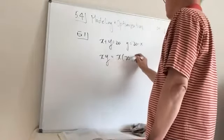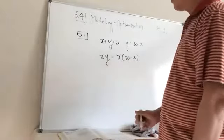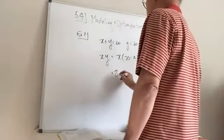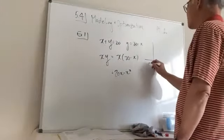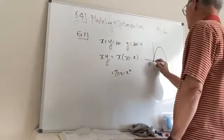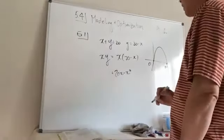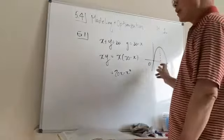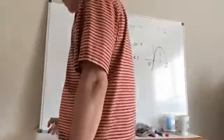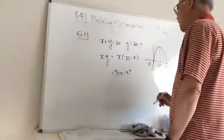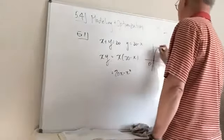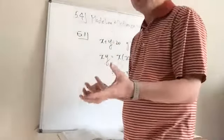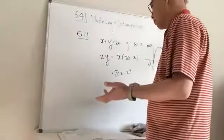We just go ahead and substitute that in. We're trying to maximize this, and if you draw the graph it's going to be 20x minus x squared — it goes from zero to 20. It's obvious the maximum is going to be right in the middle. The x value is 10, right in the middle because it's a parabola, so it's 10 times 10, which is 100. Something special happens when both numbers are equal.